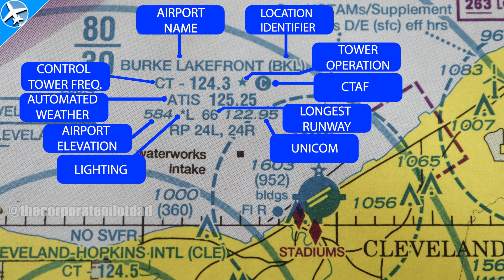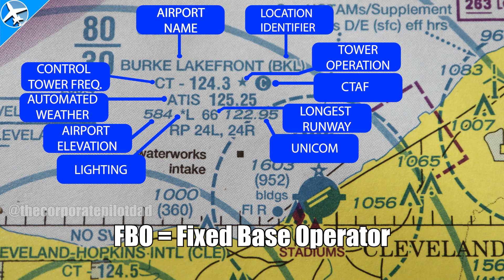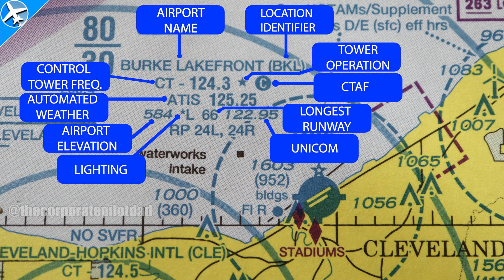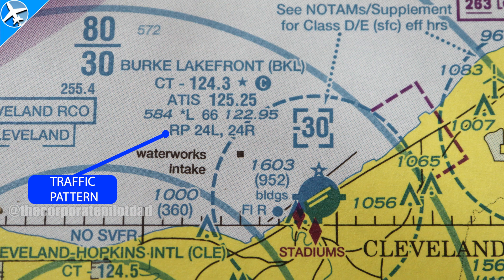The UNICOM, or Universal Communication frequency, is an air-to-ground frequency not associated with air traffic control. On this frequency you can sometimes talk to an FBO and request a taxi or have a rental car pulled up. Not all FBOs use this frequency — sometimes there are multiple FBOs at a single airport, each with their own frequency. FBO frequencies can also be found with popular apps like ForeFlight and Garmin Pilot, and these frequencies will not be found in the chart supplement.